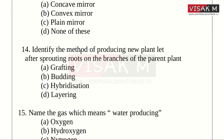Identify the method of producing new plantlets after sprouting roots on the branches of a parent plant. Option A: Grafting. B: Budding. C: Hybridization. D: Layering. The answer is layering.